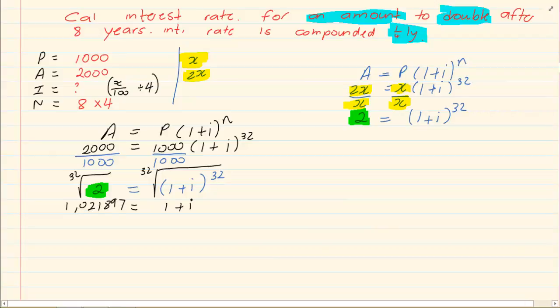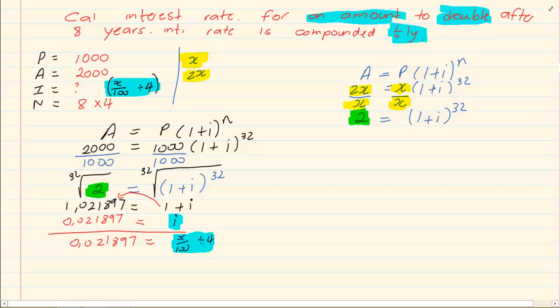Now again look I am writing down at least six places after the decimal. Then I'm going to subtract 1 because I'm going to move over this 1. That would give me i is equal to 0.021897. But that is not the end of our answer. We know that i is equal to x over 100 divided by 4 because that's what I would have done to this interest rate. That's how I would have adjusted or changed the interest rate. So I'm bringing down this adjustment.